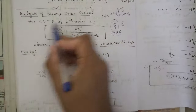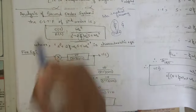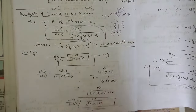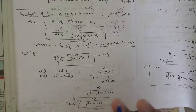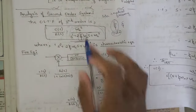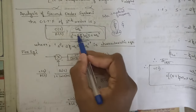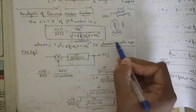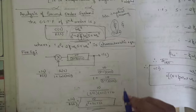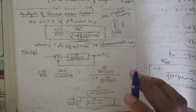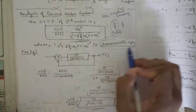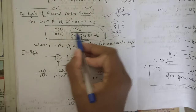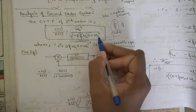Please remember this — this is the general closed loop transfer function which you need to remember. It is very important and you should not forget this formula. The denominator part, that is s² + 2ζωns + ωn², is called the characteristic equation.